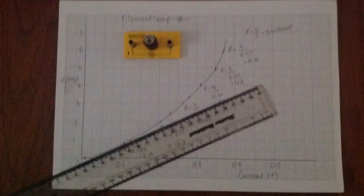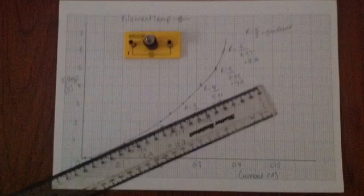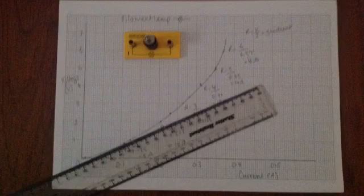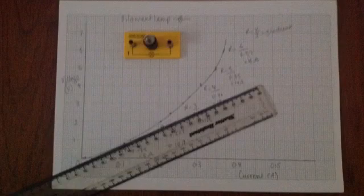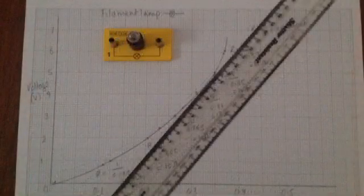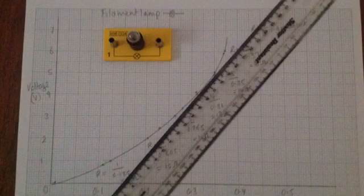I'm using my ruler here to try and help you see the gradient of my current voltage graph. As the voltage increases, and that's the voltage across the filament lamp, the current through the filament lamp is also increasing, and we saw that the bulb got brighter. But the current and the voltage are not proportionally related. We've got a curved line rather than a straight line. We can see the gradient is getting steeper and steeper, because as the voltage increases, the resistance of the filament lamp increases.